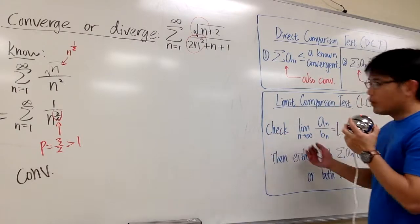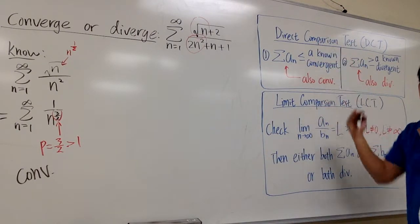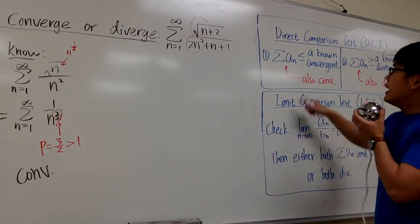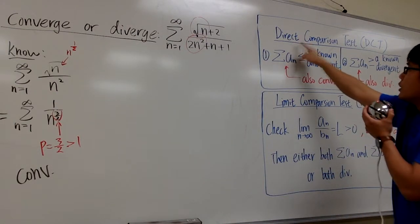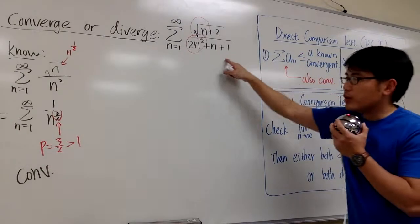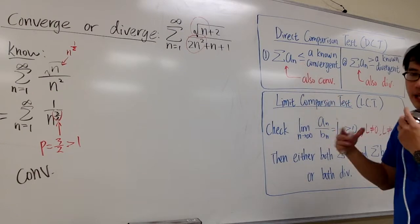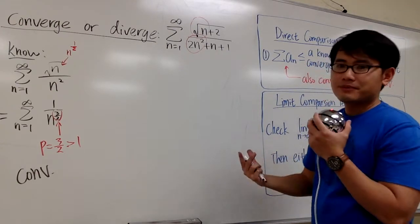And now, we have a choice to use either the limit comparison test or the direct comparison test. When we want to use the direct comparison test, we have to compare the original with something that we know better, with inequality. So the algebra sometimes may be hard.